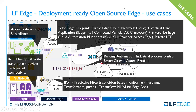This slide shows the Akraino blueprints. We have telco edge blueprints like radio edge cloud and network cloud, vertical edge application blueprints like connected vehicle and AR/VR classroom, enterprise edge cloud automation blueprints like ICN and KNI provided access edge led by Red Hat, and private LTE. We also have IoT workloads like predictive and condition-based monitoring for transformers and pumps, and TensorFlow machine learning for edge apps.